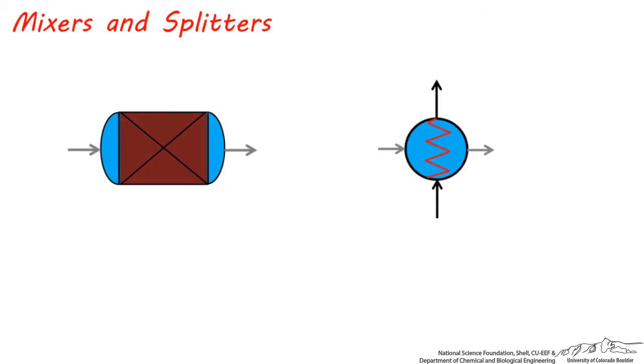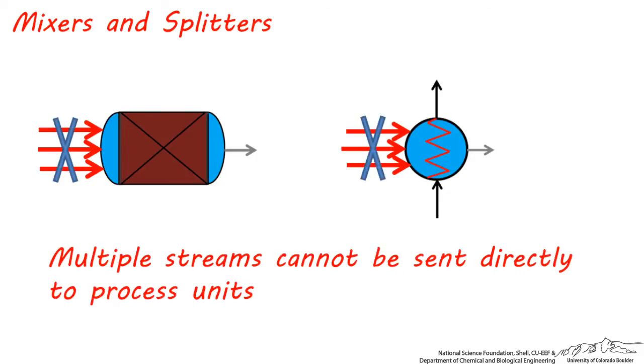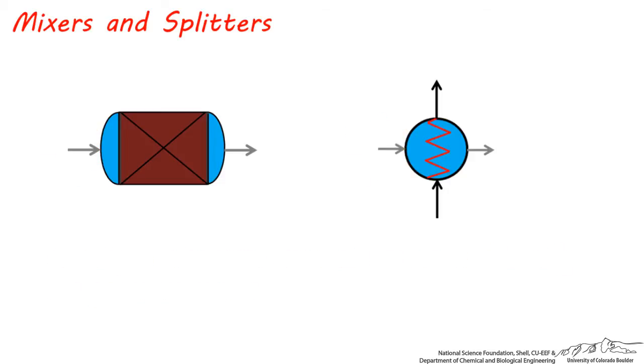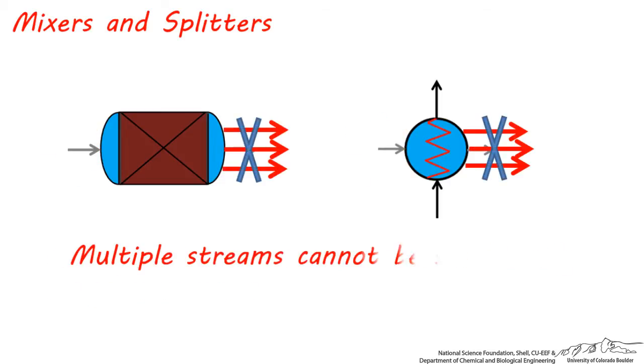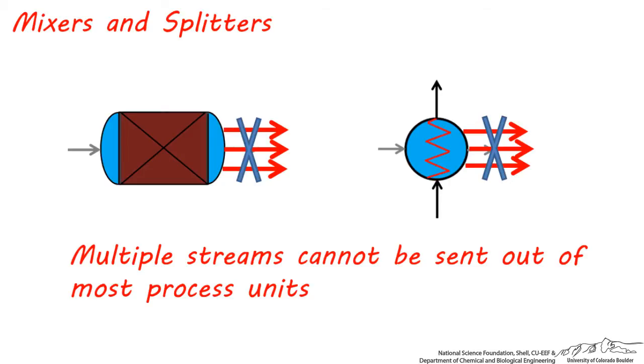The reason why mixers and splitters are used so frequently in simulation software is because in almost all cases, both ChemCAD and Aspen don't allow you to send multiple streams directly into a unit. Similarly, you can't send multiple streams of the same composition out of a reactor, heat exchanger, pump, or any other unit.